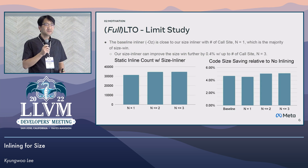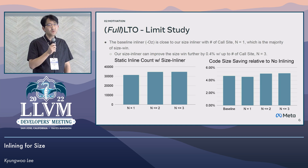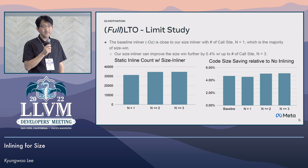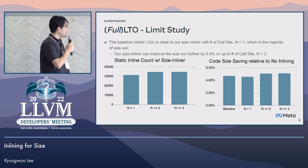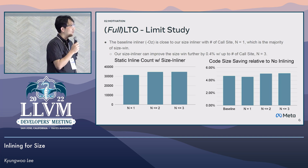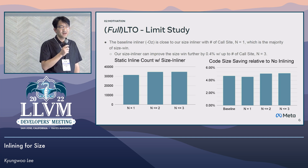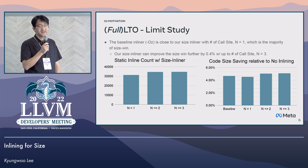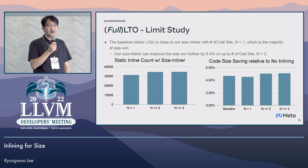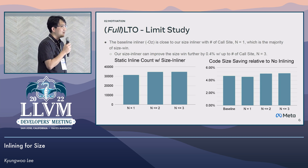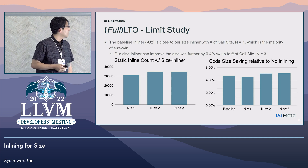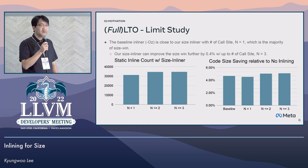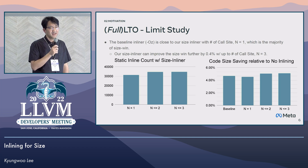I implemented this simple size cost model into the module inliner, which is recently available in LLVM using a priority queue. This graph shows the steady inline call counts and call size saving while varying the number of call sites N with the size inliner. As expected, the majority of the size saving comes from the single call site case. So the baseline inliner is already close to the case of N equals 1. However, the size inliner improves size further by up to around half a percent if we consider call sites up to N equals 3. Beyond that, there is no point to inline further to reduce binary size.